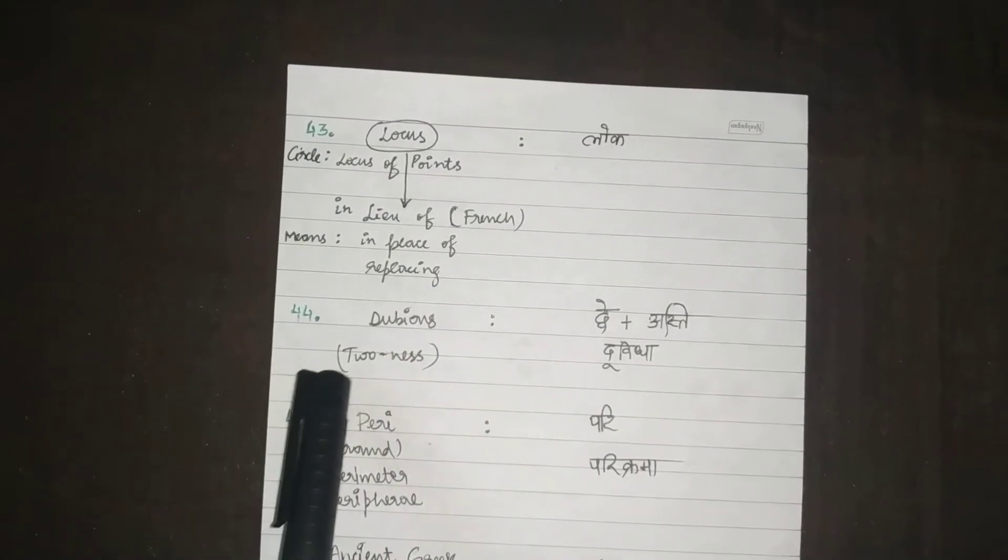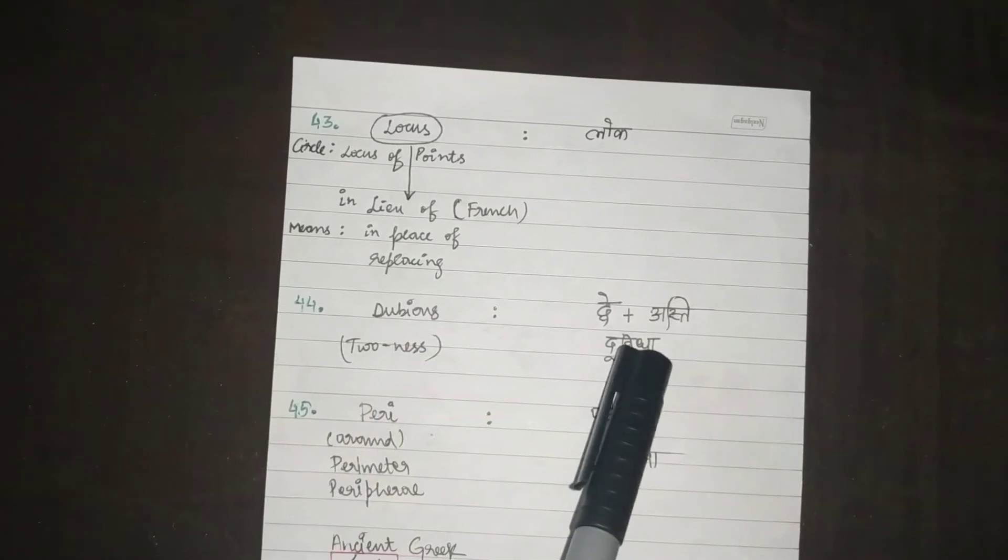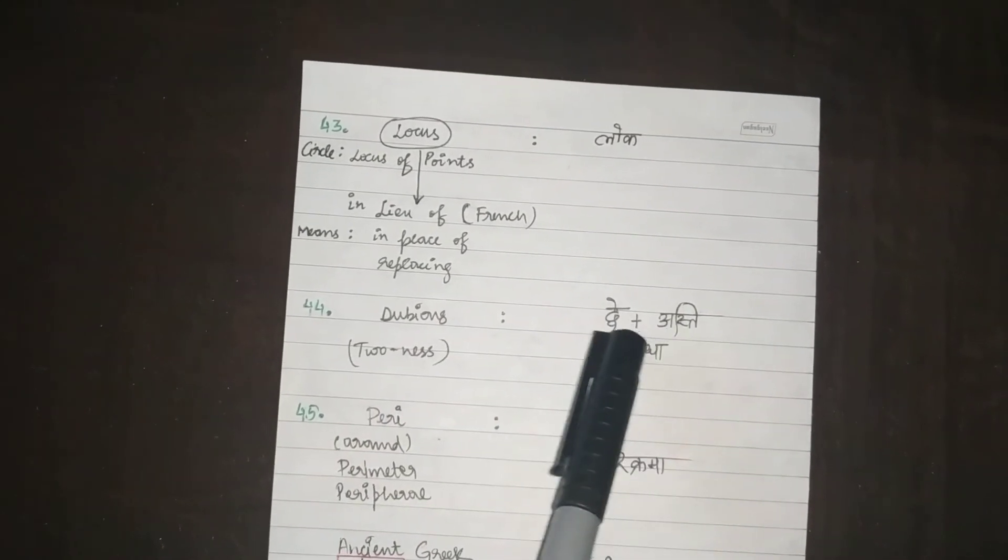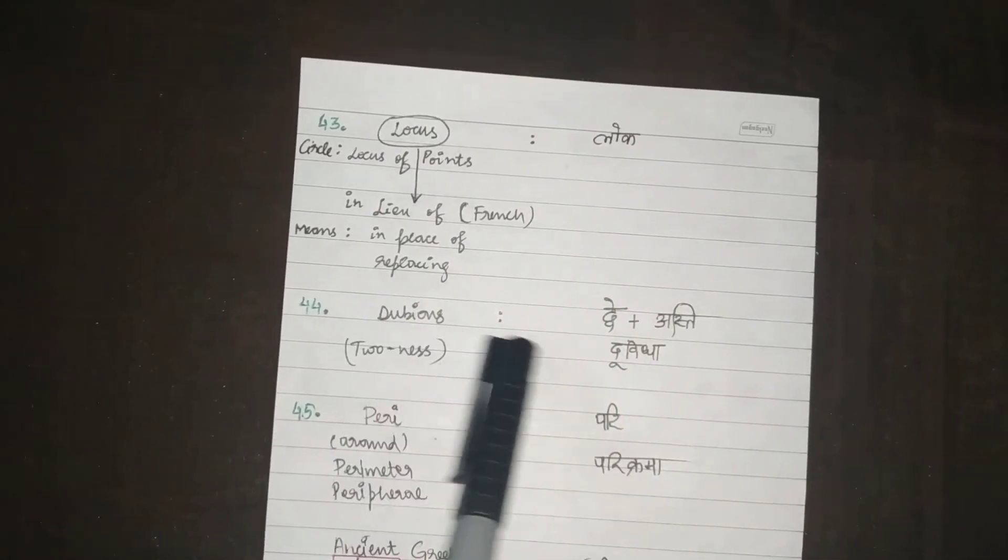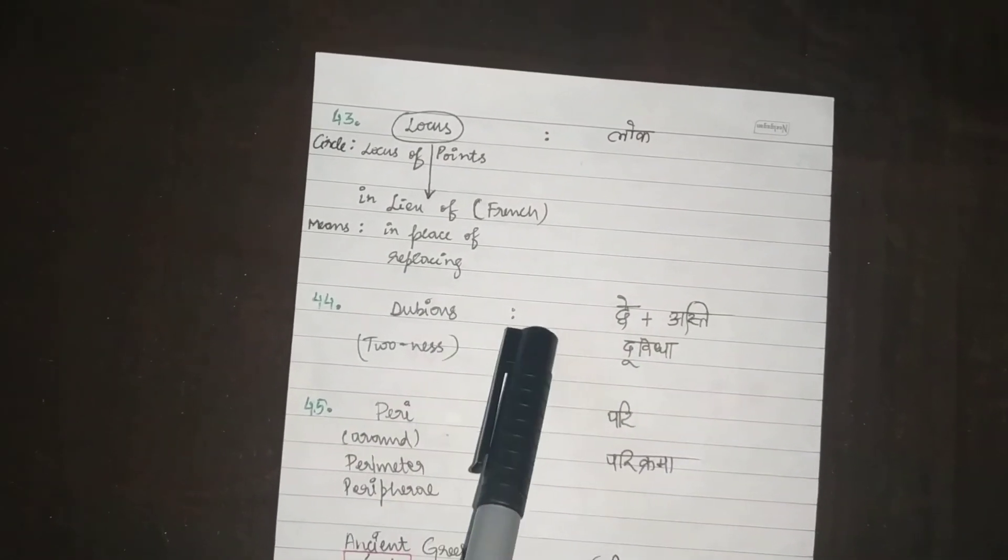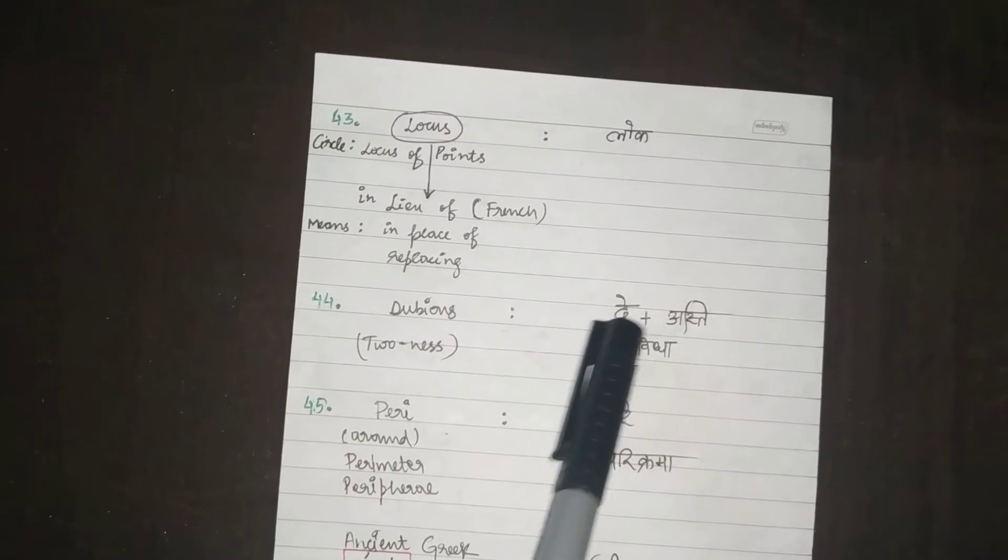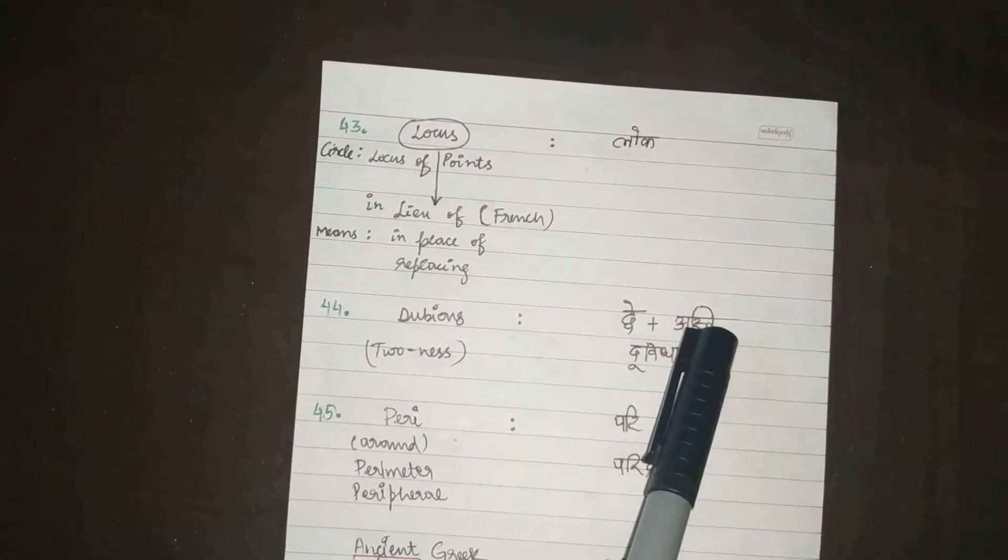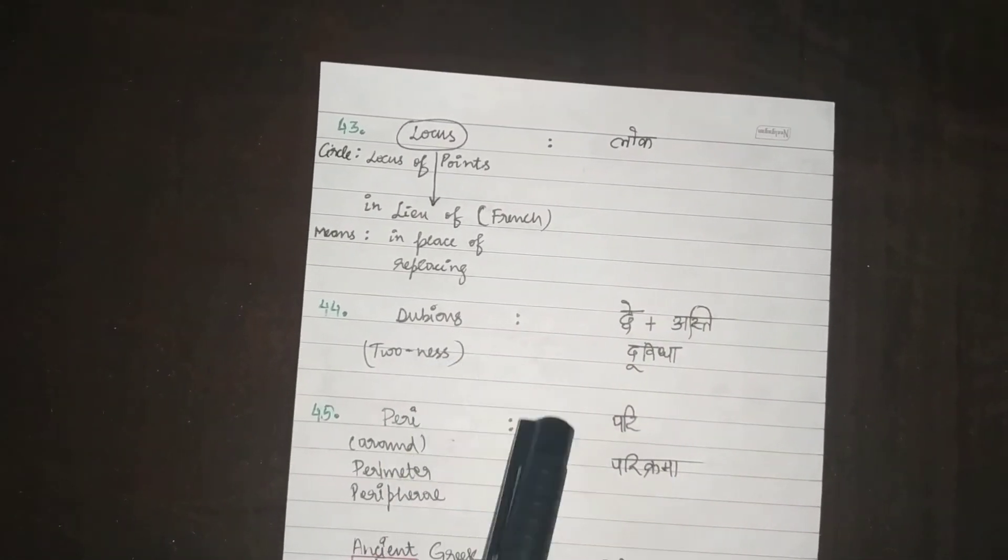The English word Dubious, which means two-ness. We have already had dwe asti. Dwe. Du vidha. Dubious. Dubious. Du vidha. Du. Dwe. Du asti. As. Ness.